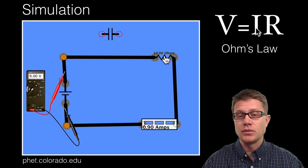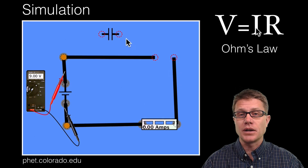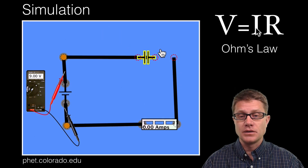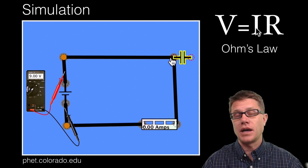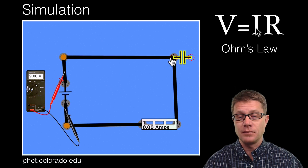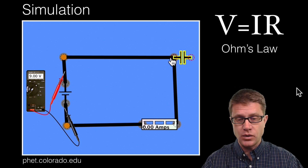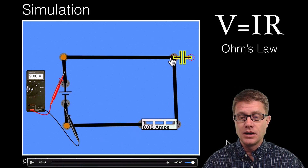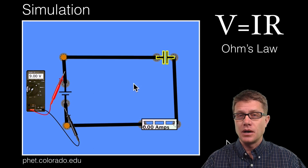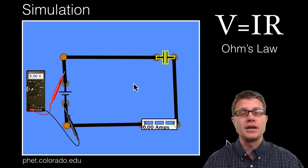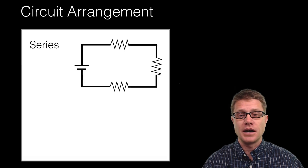Now let's figure out what happens when we get rid of that resistor and add a capacitor. Using our analogy, a capacitor is going to be like a dam. As I connect this capacitor together, watch the amps — you can see that it briefly goes up, so there's a build-up of current, but then it stops. That's because we're building up charge along each of those plates inside that capacitor.